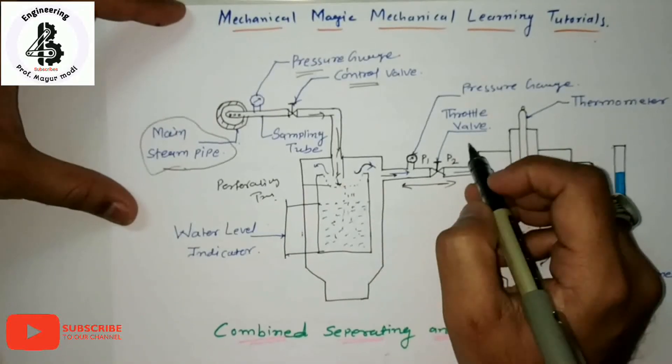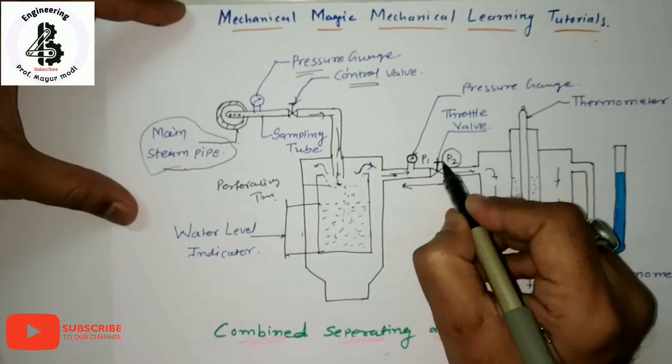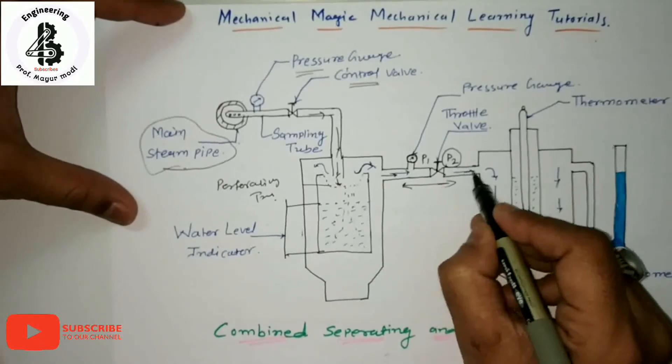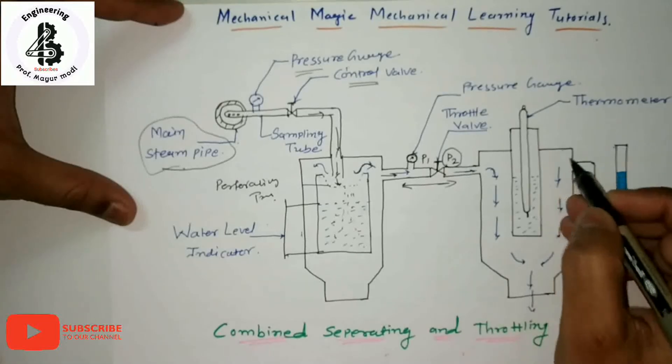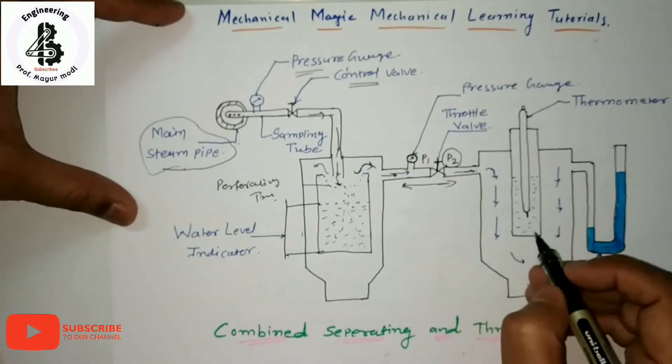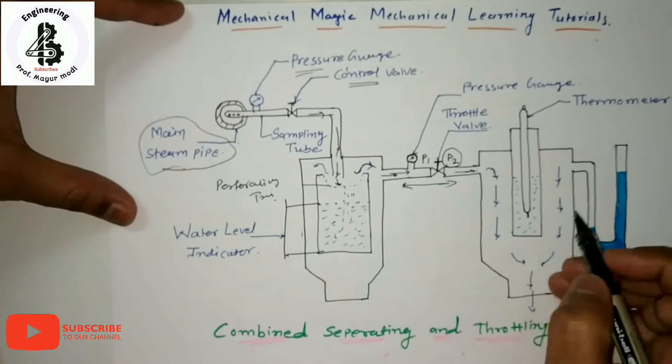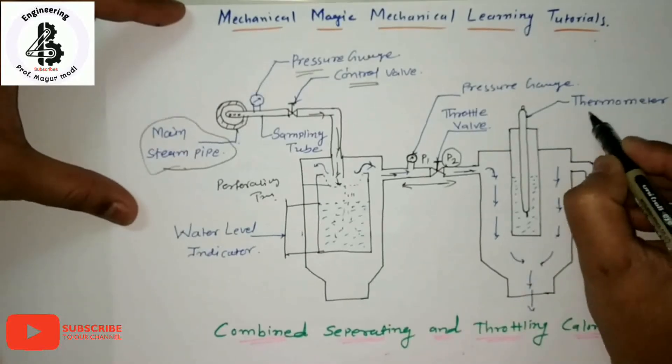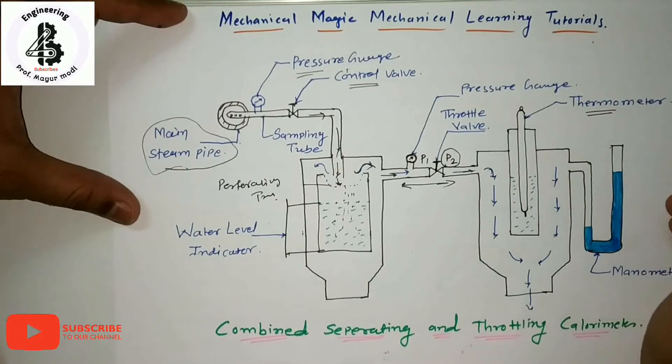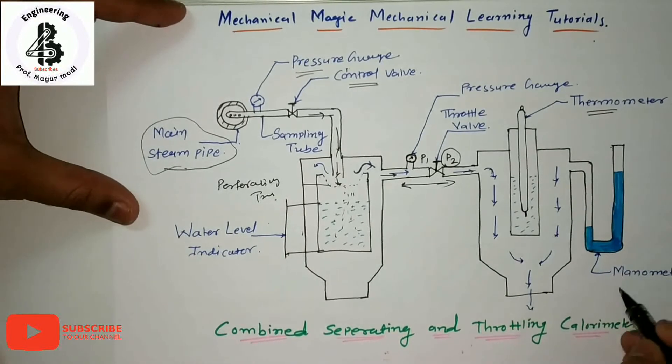That particular steam is converted into superheated steam. Temperature measurement is done with the help of a thermometer, and similar to the throttling calorimeter we measure the height of the water.